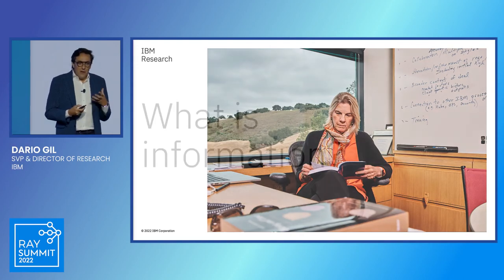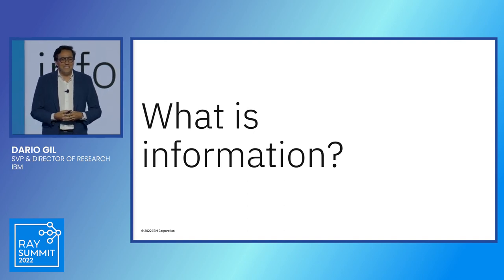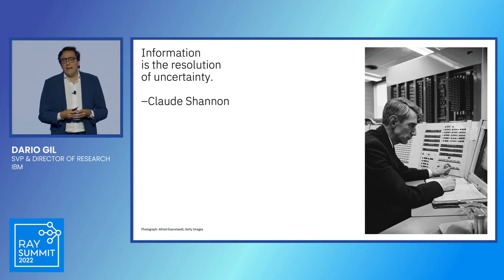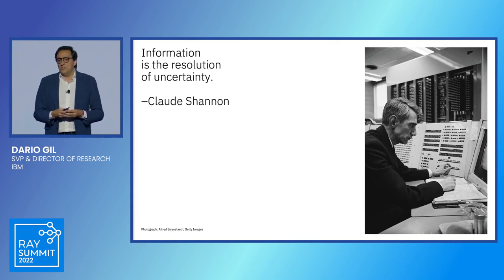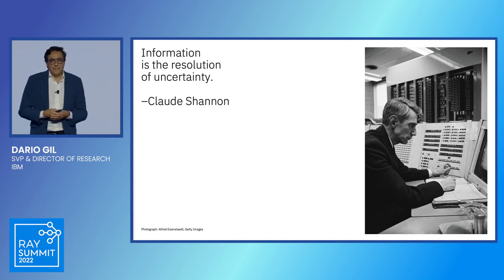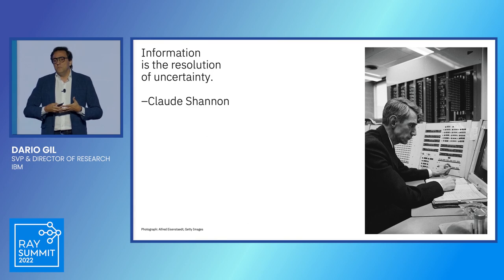What brings us all together and makes us incredibly passionate is to explore the future of computing and ways to advance the science of information. Today I want to revisit an old question which we take for granted in our IT world: what is information? And what are its origins? To understand the current situation, I think it's useful to go back to the seminal work of Claude Shannon. In the 1940s, Shannon famously gave us a mathematical grounding for how to understand information. He defined it quite precisely: information is the resolution of uncertainty. He introduced to all of us the idea of the binary digit — the bit.